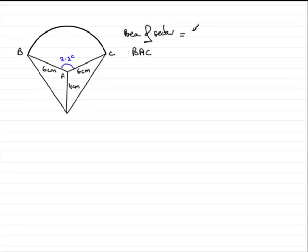Now that fraction, if you're dealing with radians, is 2.2 radians compared with 2π radians. 2π, remember, is the amount of one complete turn.